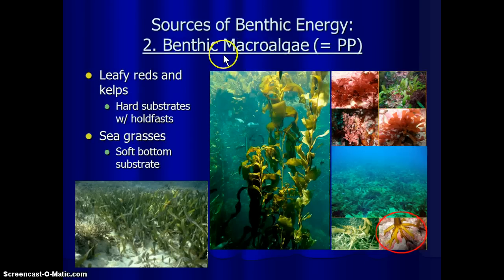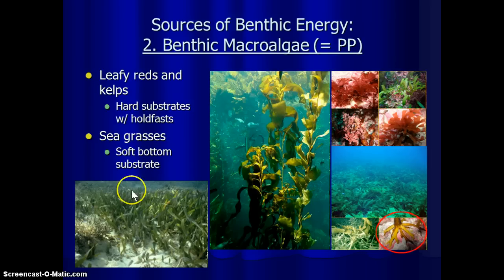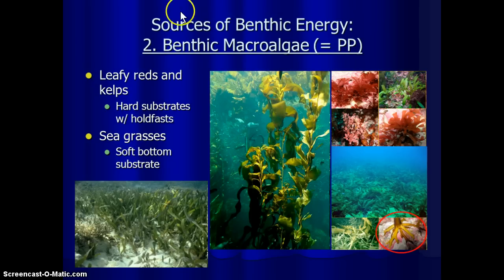The second source is the more obvious one — it's still primary productivity, but it's macroalgae rather than microalgae. Macro means bigger, we can see it with our eye — these are the seaweeds. There are seagrasses, kelps, leafy red algaes, and red kelps, and these dominate certain areas, especially certain areas of the rocky intertidal zones. Seagrasses like a softer bottom, so they usually grow in sands and muds, but leafy reds and kelps like hard, rocky substrates — like the rocky coasts of the Pacific, where we get kelp forests. They're essentially doing the same job as the phytoplankton: trapping energy in the form of sunlight, fixing organic carbon, and fueling an ecosystem.